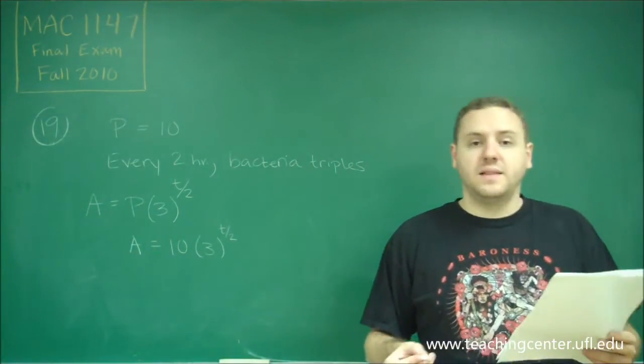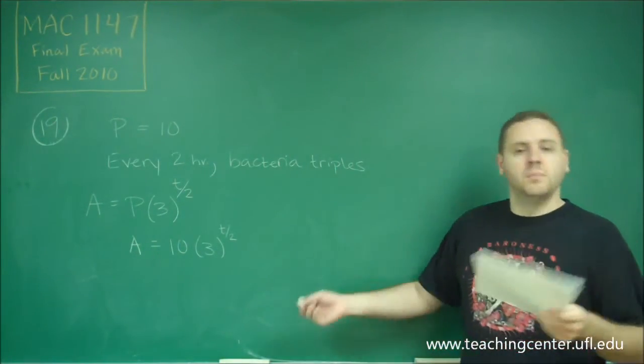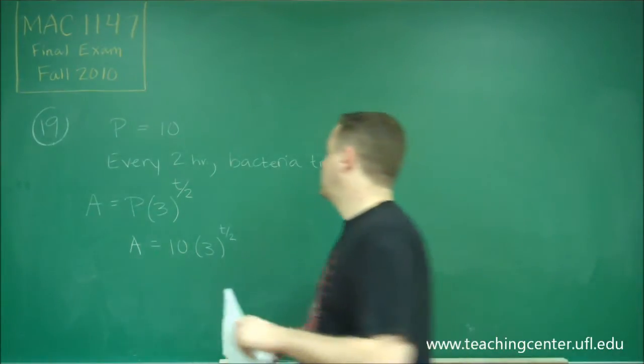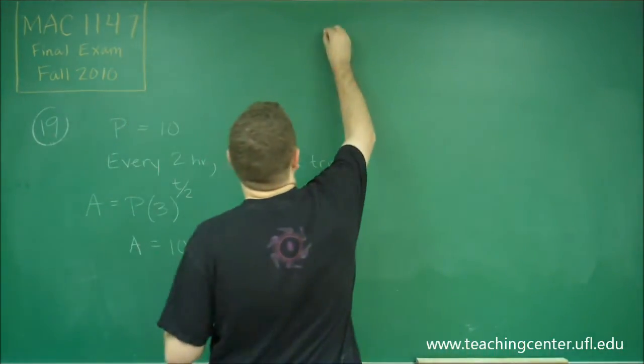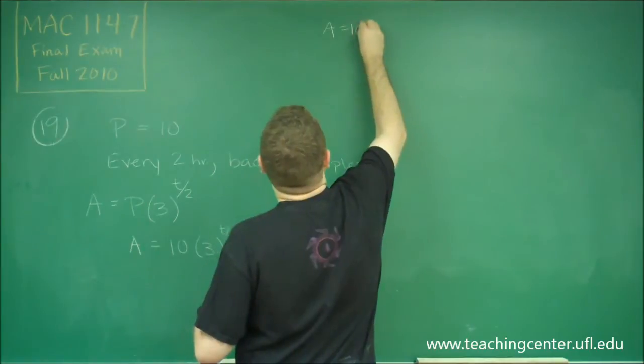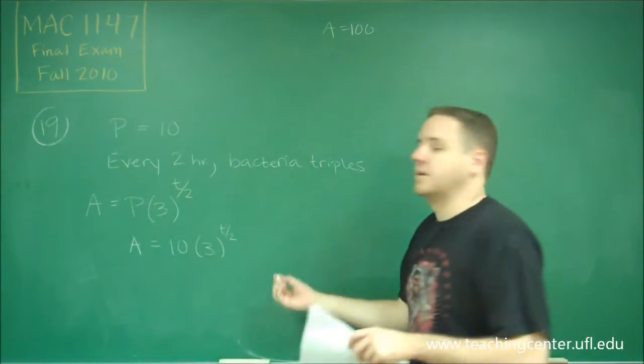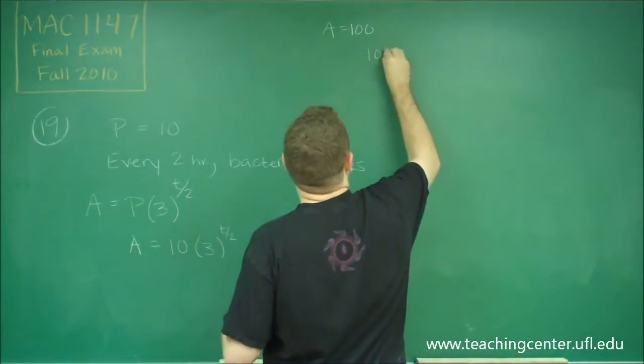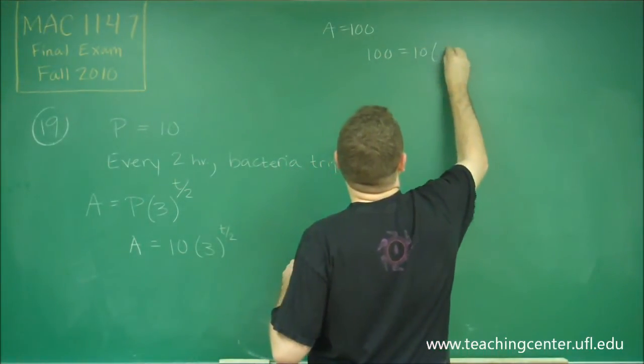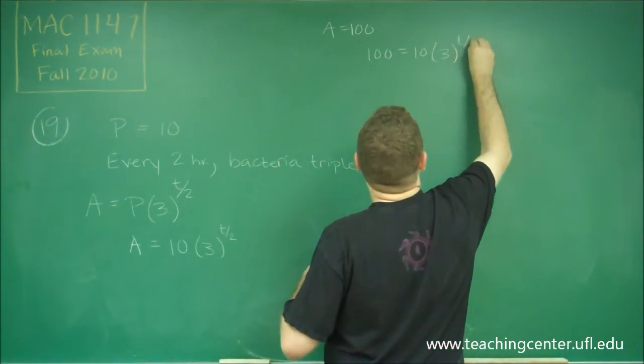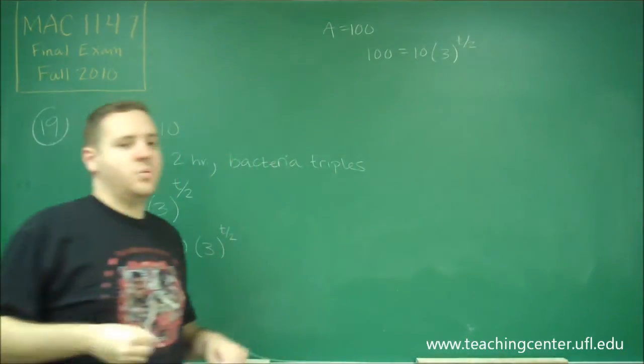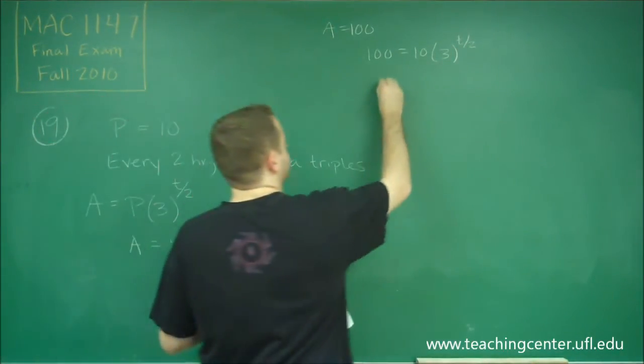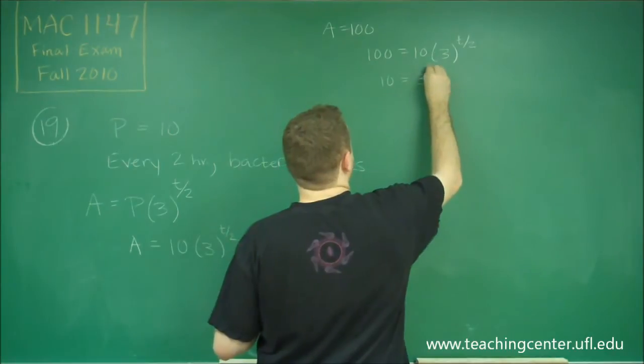So our question is to find that time, t, when our number is 100. So we just want to plug in a equals 100 to our formula here, and then we're going to solve for t. So we get 100 equals ten times three to the t over two power. We can divide both sides by ten, and just get ten equals three to the t over two.